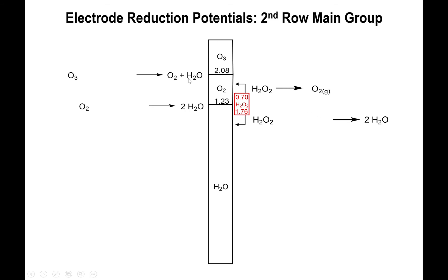Balancing hydrogens: two hydrogens on the right side of the first equation, so add two H+ on the left. Four hydrogens on the right of the second equation, so add four H+ on the left. Two hydrogens on the left of the third equation, so add two H+ on the right. Four hydrogens on the right of the last equation, so add two H+ on the left. Then use charges to determine electrons: overall charge 2+ on the left of the first — two electrons needed; 4+ on the left of the second — four electrons; 2+ on the product side of the third — two electrons on that side; 2+ on the left of the last — two electrons. Note that the upper disproportionation reaction is actually an oxidation because the electrons are on the right side.